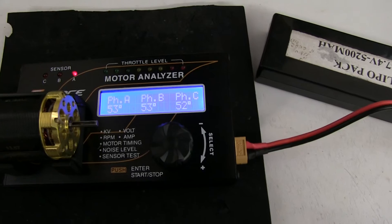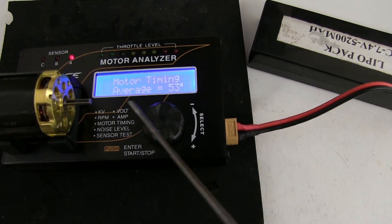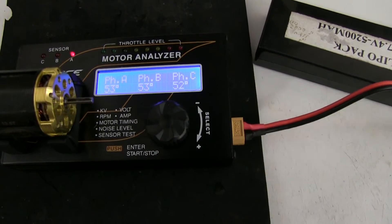So, minimum is 30, max is 53. And the individual one is 53, 53, 52, which is close enough.